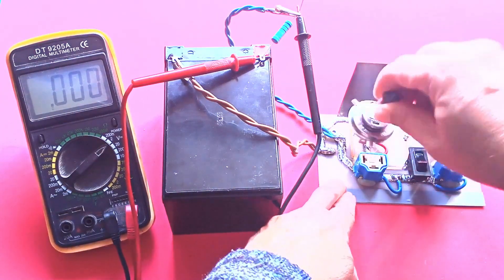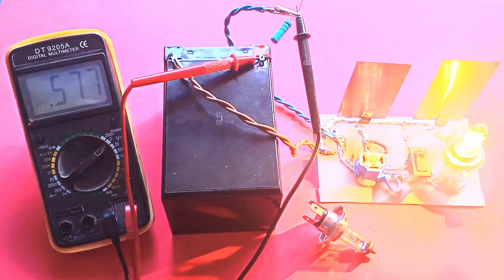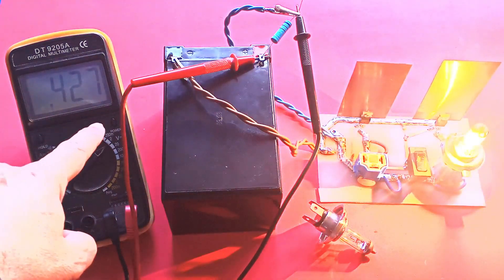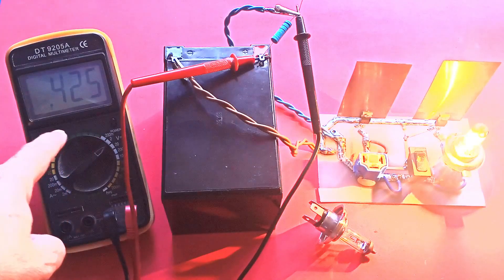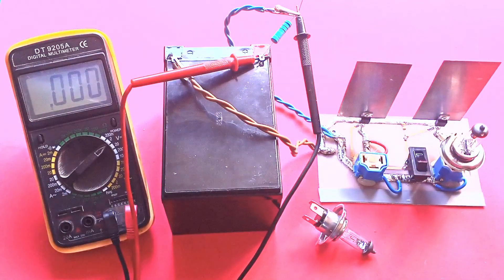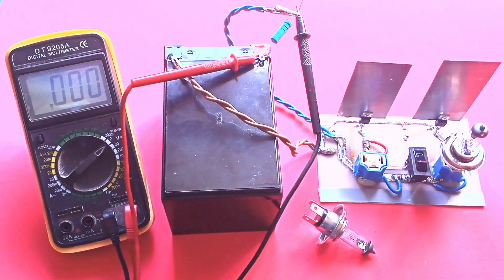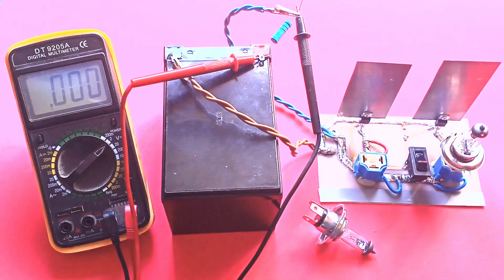Next, reconnect the second lamp while disconnecting the first and repeat the measurement. This time, a voltage of about 428 millivolts is read across the shunt resistor. These two readings are sufficient to calculate the current flowing through both the silicon and silicon carbide MOSFETs.